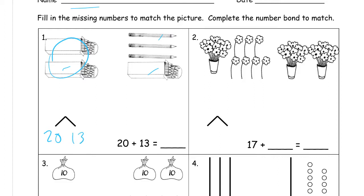And to count all of them, this is an addition equation, we're going to count everything: 10, 20, 30, and three more is 33. All right, so we completed the number bond, we filled in the missing numbers, and it all matches the picture.